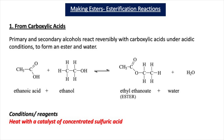To make an ester from a carboxylic acid, you heat your primary or secondary alcohol with a carboxylic acid in the presence of a catalyst, which is concentrated sulfuric acid. An example is ethanoic acid reacting with ethanol to form ethyl ethanoate and water - and the reaction is reversible. Looking closely at this equation, you can see that a hydrogen from the alcohol has joined with the OH from the carboxylic acid to form water, and the oxygen in the ester attached to the C=O has come from the alcohol.